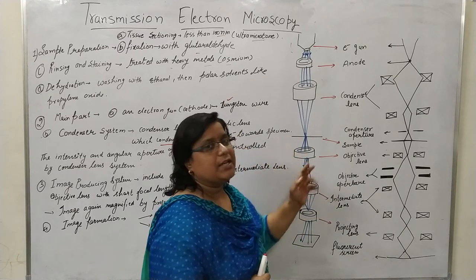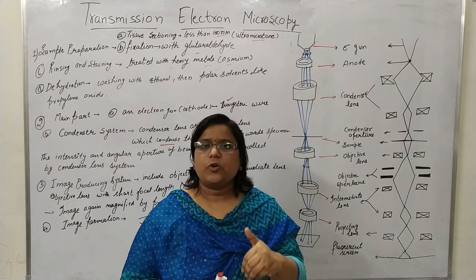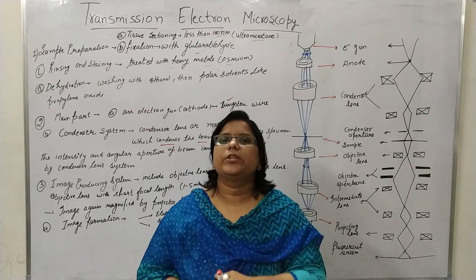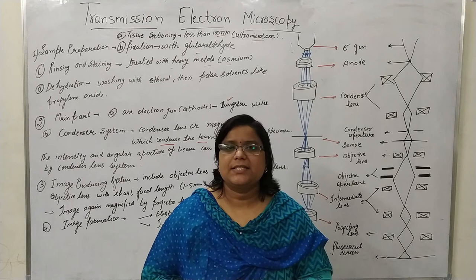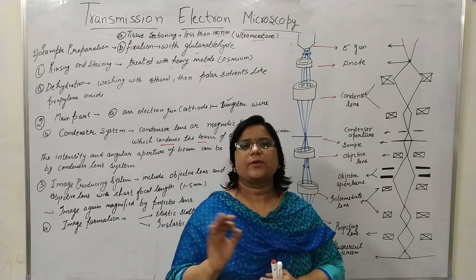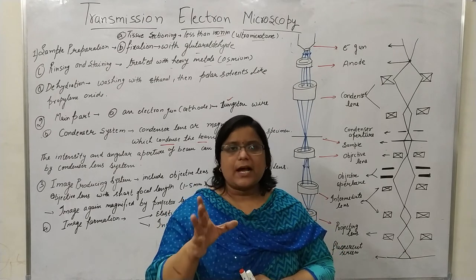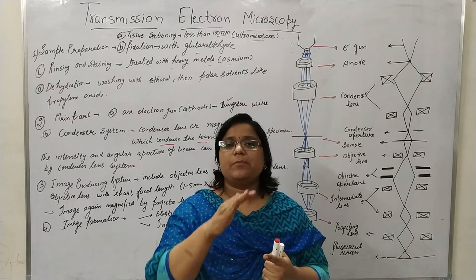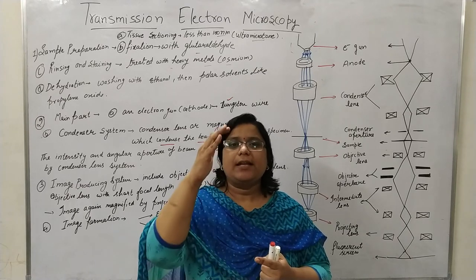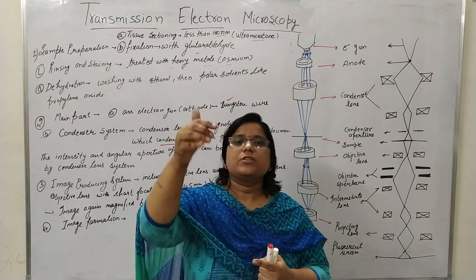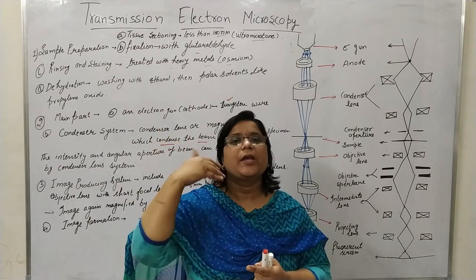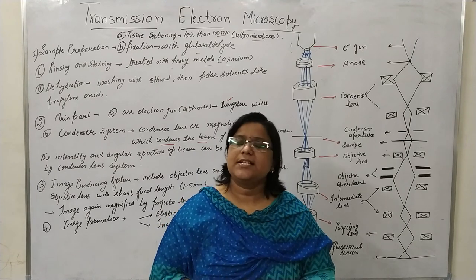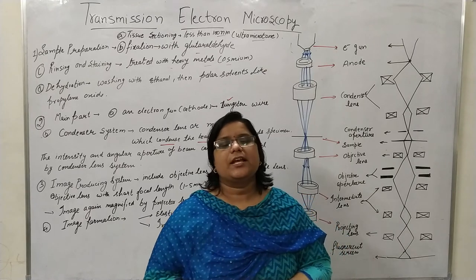In TEM, the electron beam is transmitted through the sample — the electrons pass through it. That is why it is called Transmission Electron Microscopy. This is the key difference: in SEM the sample is kept last, but in TEM the sample is kept in the middle and the electrons are transmitted through it.